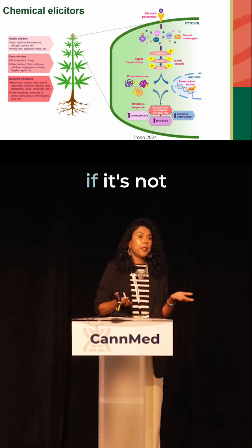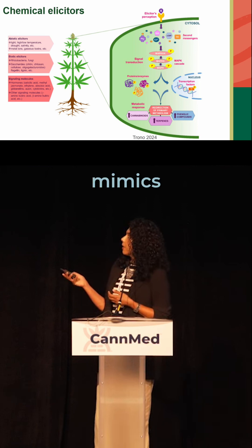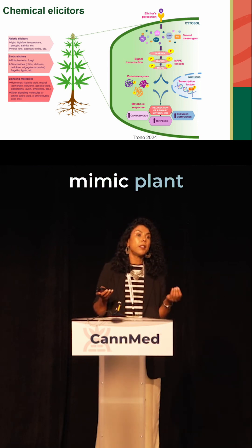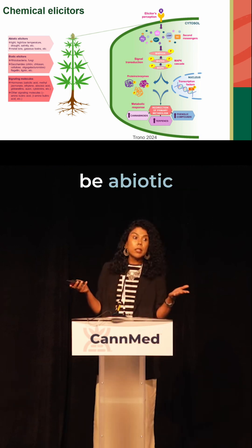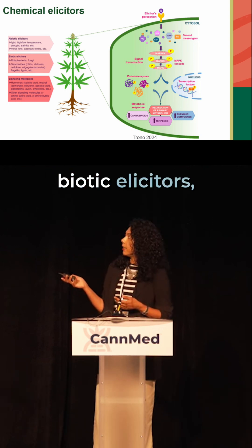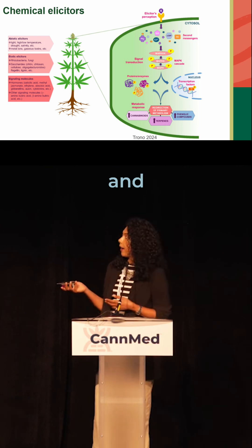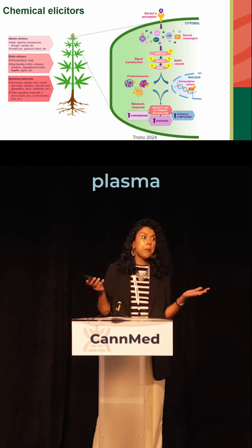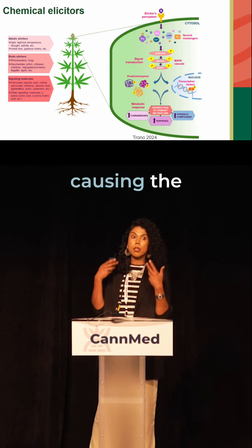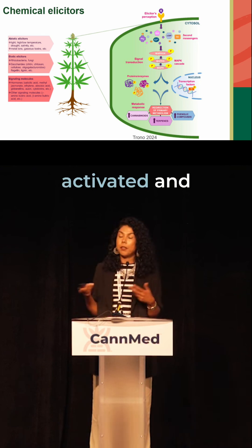Chemical elicitors, if they're not familiar to you, are mimics — molecules that mimic plant defense signaling responses. These molecules can be abiotic elicitors, biotic elicitors, and even synthetic elicitors and phytohormones. The elicitor is potentially binding to a receptor on the plasma membrane of the plant and causing the plant defense response to be activated.